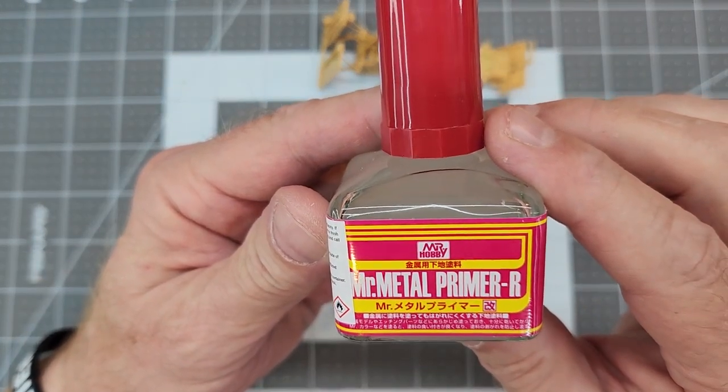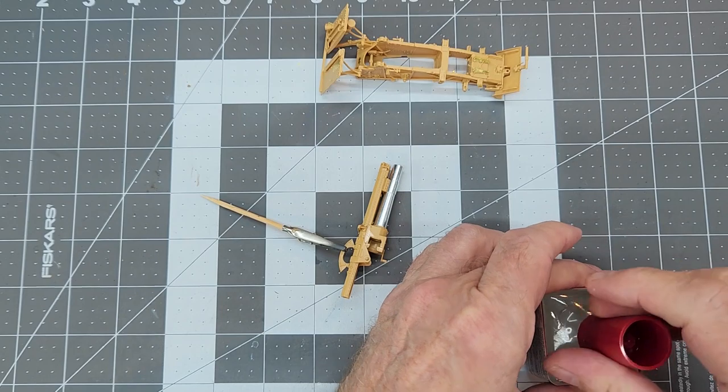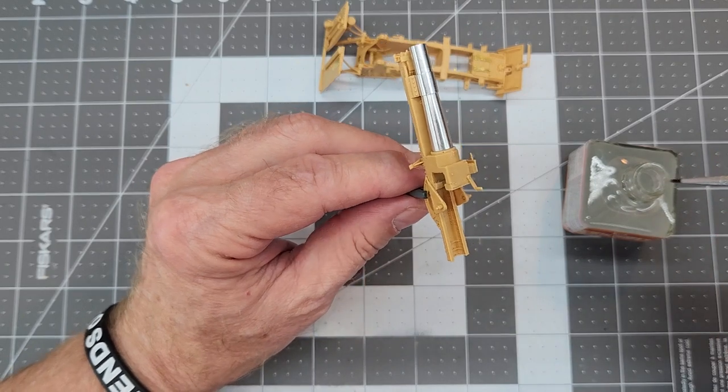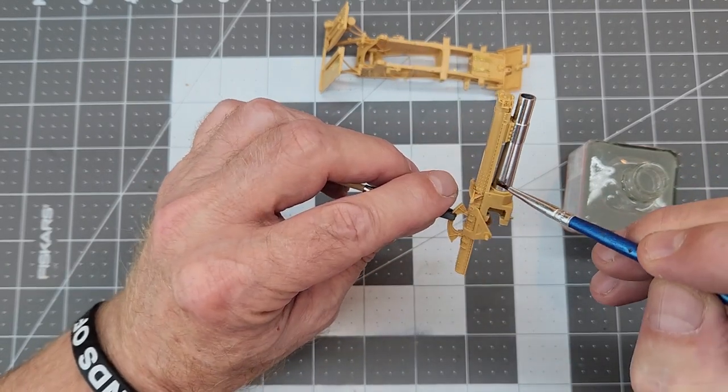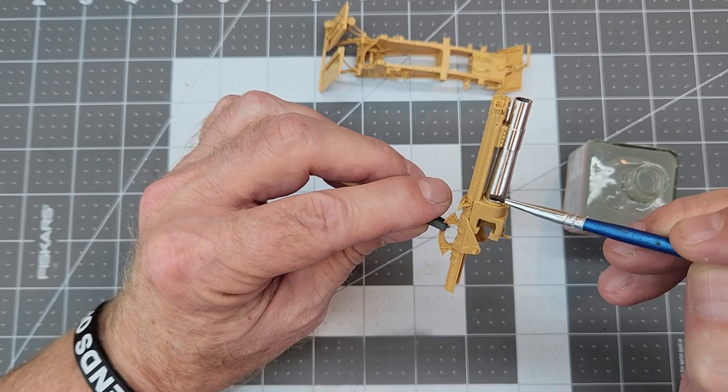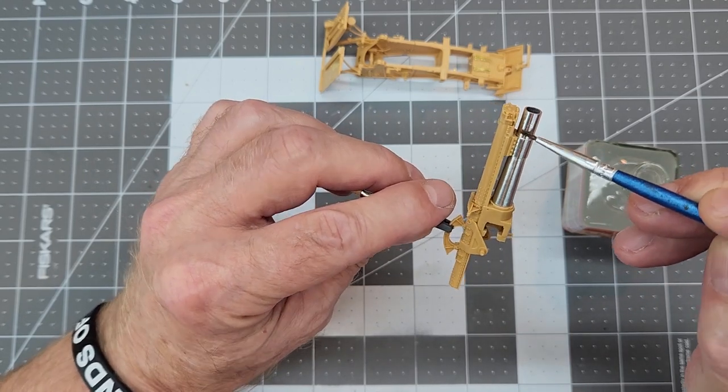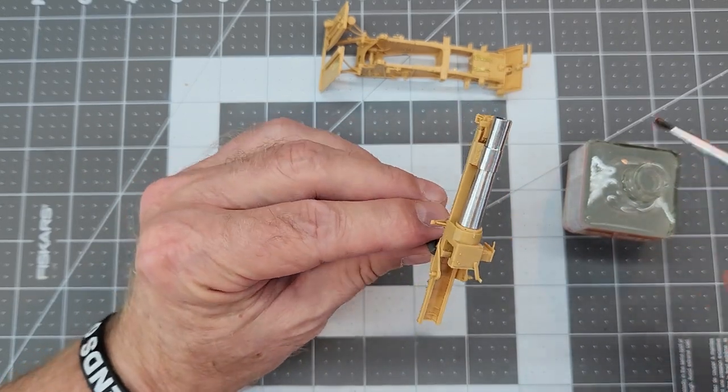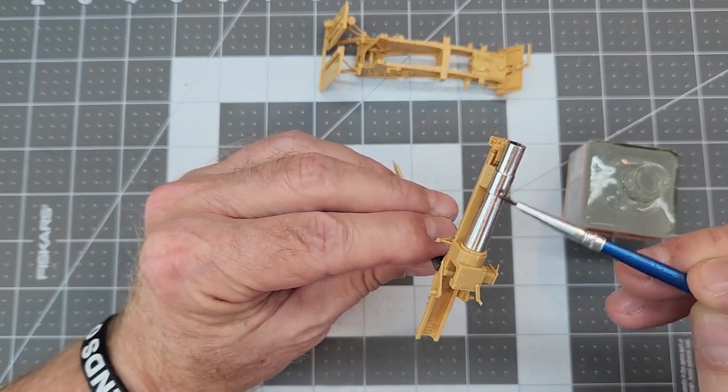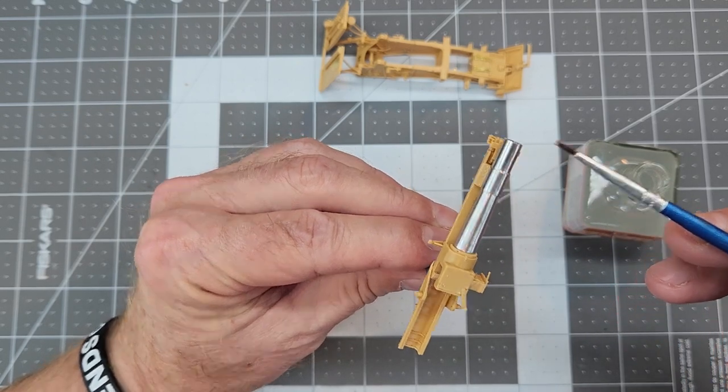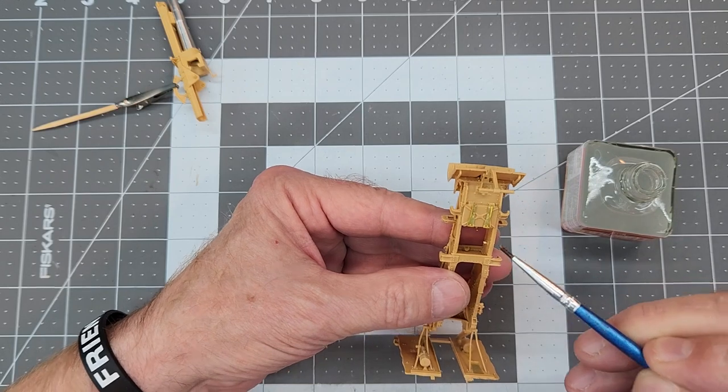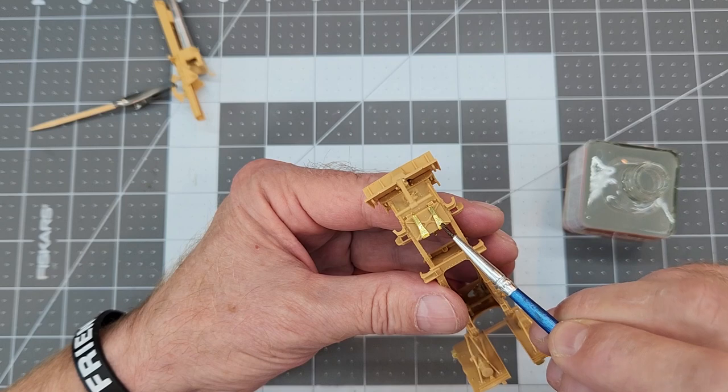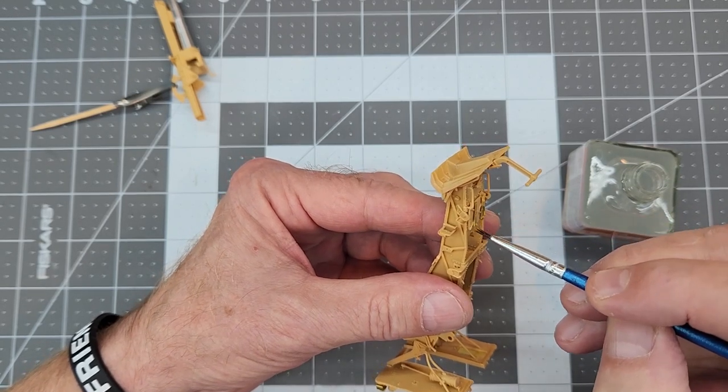Since I'm using acrylic paints in this project, it'll dry real fast. We'll paint these parts first and then transfer them to the new board. Since we have metal parts, I'm going to use Mr. Metal Primer R here. We're going to prime all these PE parts and especially the metal gun barrel, which is turned aluminum. This stuff dries really quick, so we need to get it on there. It dries real thin though, so you don't have to worry about any brush overlaps or brush strokes.